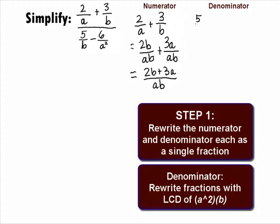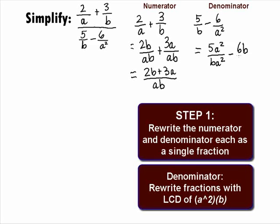Now let's look at the denominator. We need to subtract 5 over b minus 6 over a squared. The least common denominator here would be a squared b. We would have to multiply the numerator and denominator of the first fraction by a squared to get 5a squared over ba squared. We would have to multiply the numerator and denominator of the second fraction by b to get 6b over a squared b.